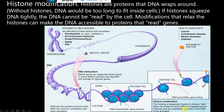If an epigenetic factor binds loosely to the histone tail, the DNA genes are accessible and can be transcribed — the gene is active. But if there is tight compaction or tight binding of epigenetic factors, the DNA is inaccessible and the gene is inactive. This is called histone modification, and it determines whether a gene will be expressed or not.